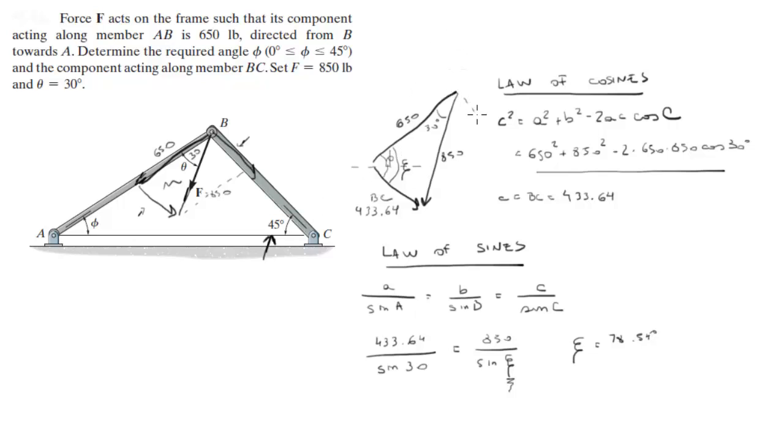So, let me redraw this. This is this angle right here, which is this vector right here, right? And we know that this angle is 45, which is this one right here, which means that this angle is also 45, right here. Which means that this angle right here is also 45.